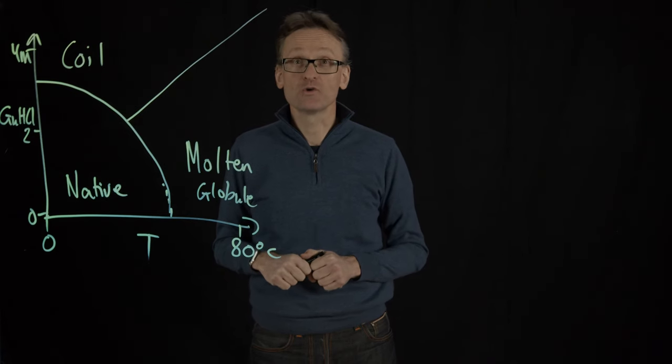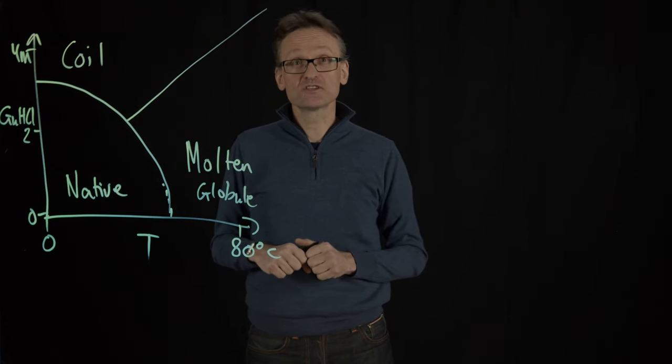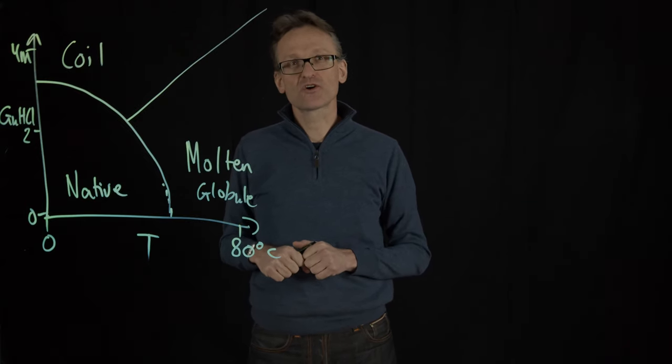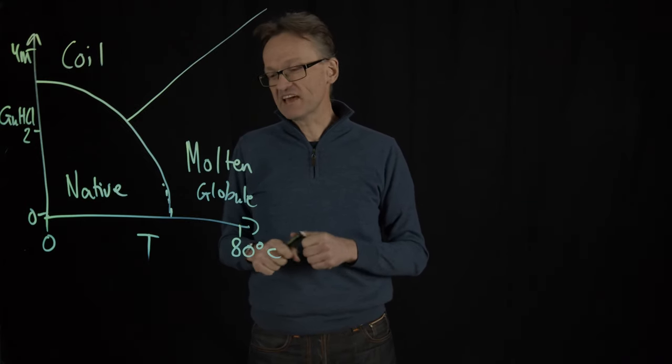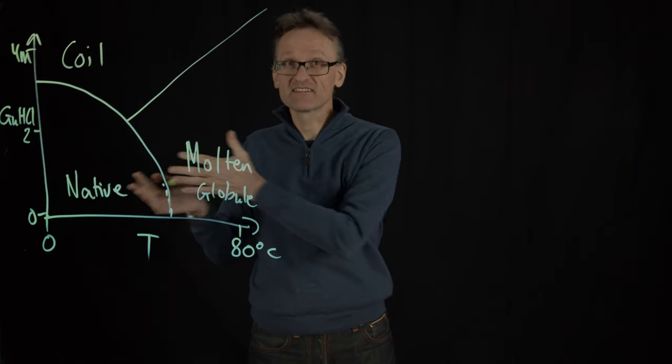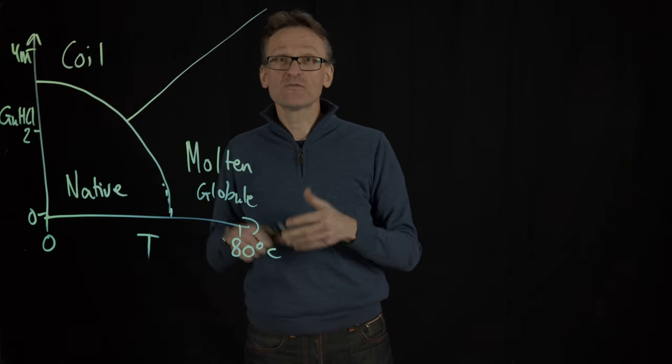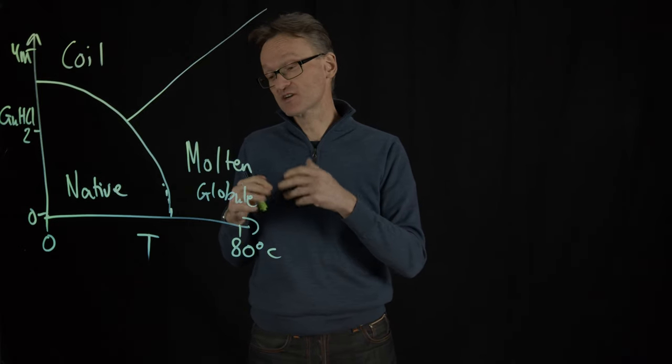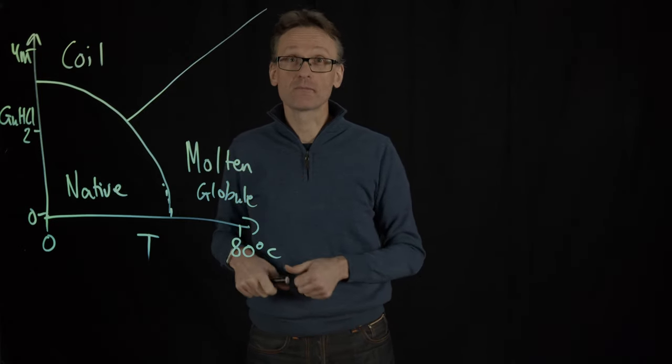So the problem is that I haven't showed you any molten globules. So the first thing we're going to need to do is try to look at some of these structures and what they are. The problem though is that I can't really crystallize it because it's not a well-defined structure like the native structure. So you're going to have to make do with some hand-waving examples here and some structures we've been able to determine with NMR.